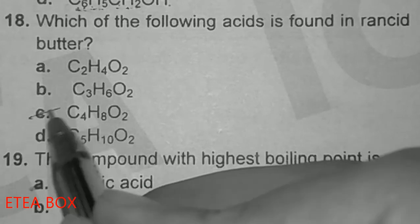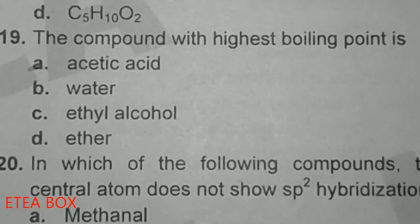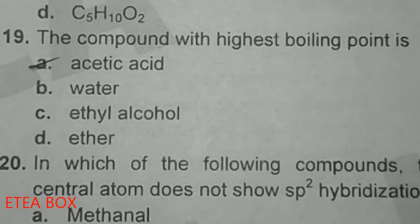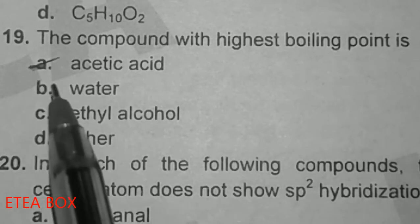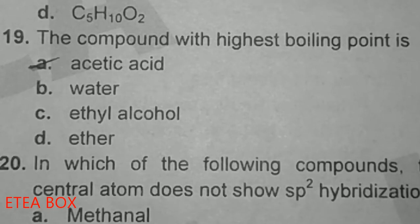Which compound has the highest boiling point? Acetic acid has the highest boiling point because the dimer of acetic acid contains two hydrogen bonds, while water contains only one hydrogen bond. Alcohol also contains one hydrogen bond, and ether does not contain hydrogen bonds. So option A — acetic acid — has the highest boiling point.